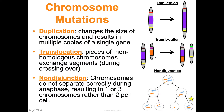Non-disjunction is when chromosomes do not separate correctly during anaphase. Instead of ending up with one copy of each chromosome, the resulting gametes have the wrong number. For example, in an organism with four chromosomes, the end result should be cells with two chromosomes each — but if they don't separate evenly, one cell might have three and another only one, leading to problems when that gamete participates in fertilization.